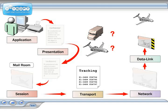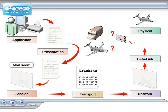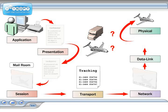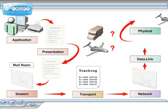The physical layer is the last stage. The envelope is put on an airplane and taken to its destination. This is similar to putting the packet onto the network cable at the physical layer of the OSI model.